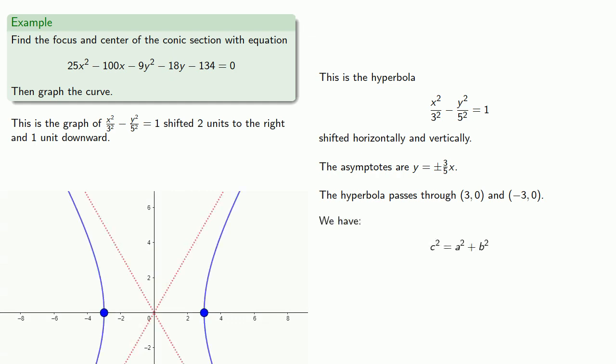We find our focal distance c² = a² + b² = 9 + 25 = 34, so c = √34. Our foci are located √34 away from the center in the horizontal direction. When we translate, all features undergo the same translations.